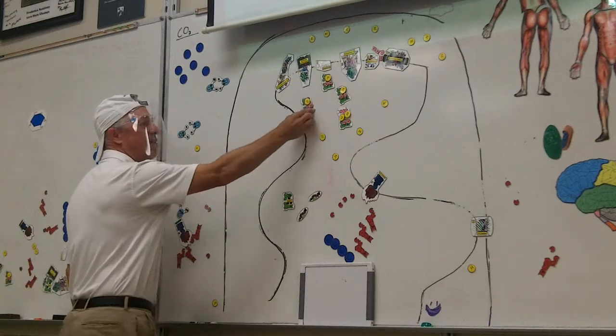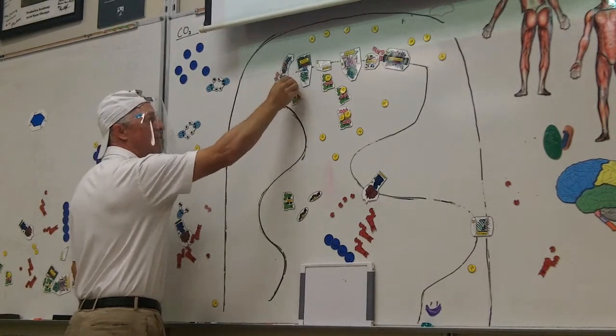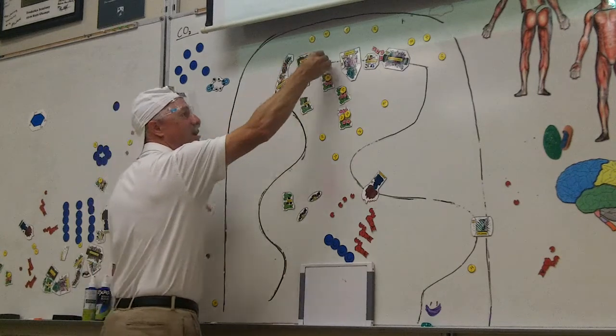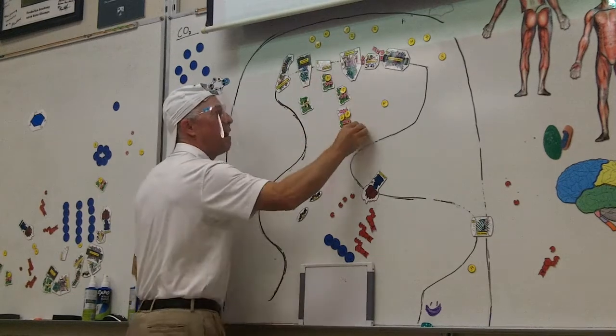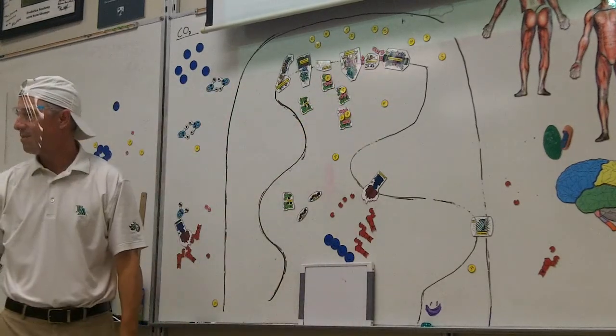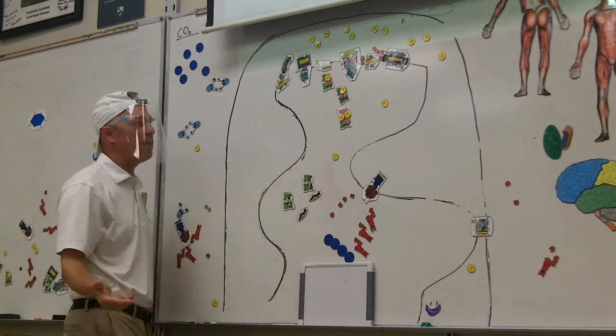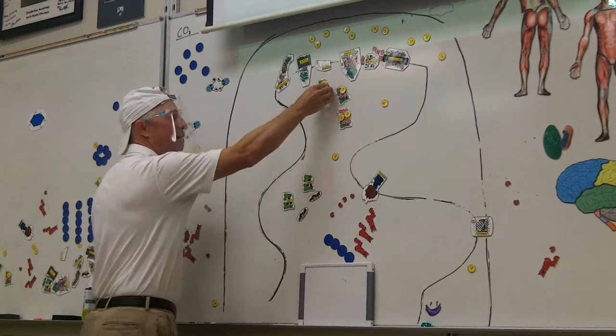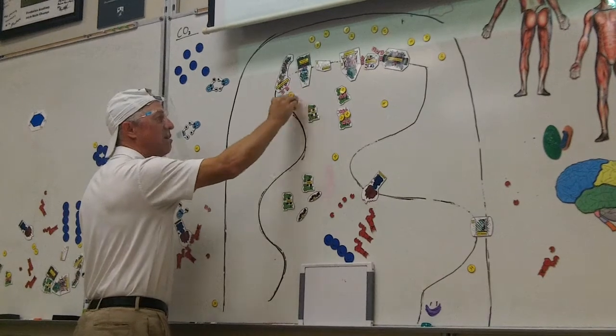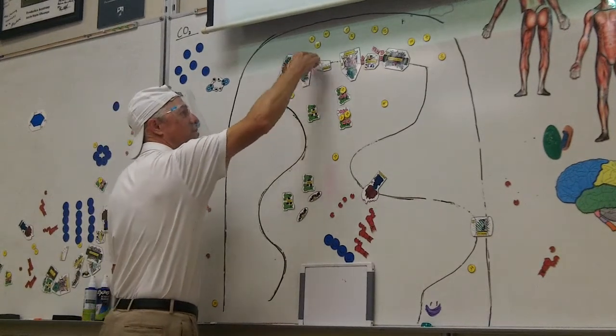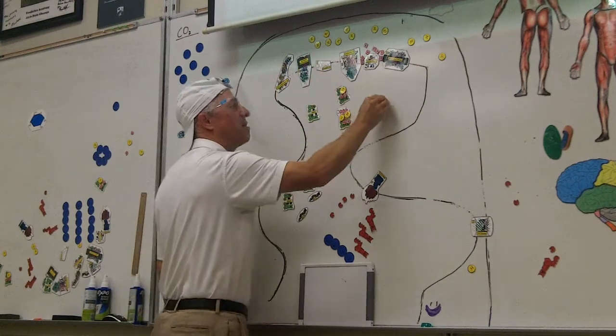So let's take a look again. Here comes NADH, drops off electrons, drops off its hydrogen. The electrons fall down the chain. Hydrogen gets pulled out, hydrogen gets pulled out, hydrogen gets pulled out.